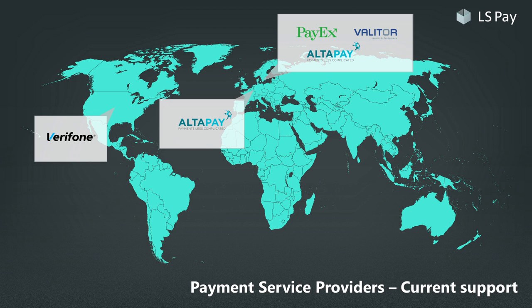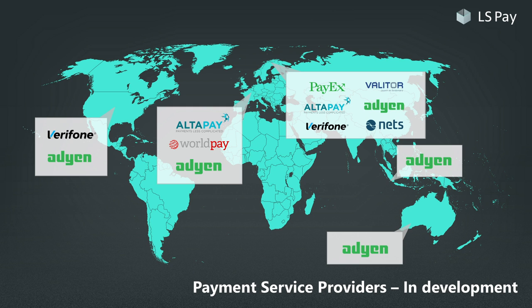Let's see how the picture looks when we add the next batch of PSPs we are currently building integrations to. In the Nordics, we are further adding to our offering by introducing Verifone Nordics and NATs. We are also adding support for WorldPay in their supported European countries, such as the UK and Germany. And importantly, we are building an integration with ADN, giving us an enormous geographic reach. On our roadmap, we also plan to offer services for Canada, the Middle East and Africa, and to enable mobile wallets such as Alipay and WeChat Pay for the APAC region. For LS Pay, the objective is simple: for each of our main regions, we aim to support multiple PSPs so that our customers have a choice when selecting a payment partner.